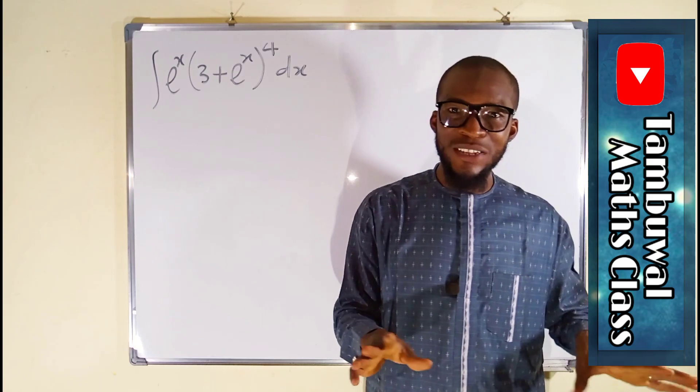So we have du equal to: if you differentiate a constant you get 0; if you differentiate e to any function, it is e to that function multiplied by the derivative of the function. The derivative of x is 1, so it will not change anything, and we have du equal to e to the x dx. Since we want everything in terms of u, we make dx the subject: dx is equal to 1 over e to the x, du.